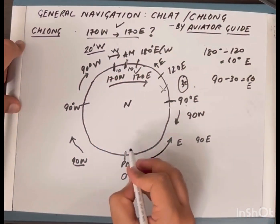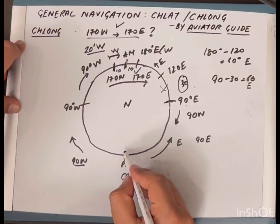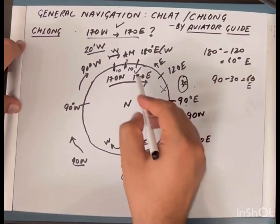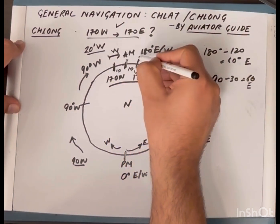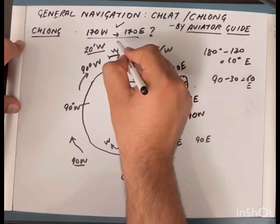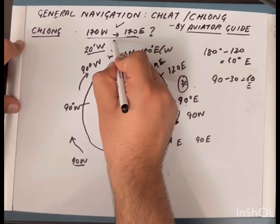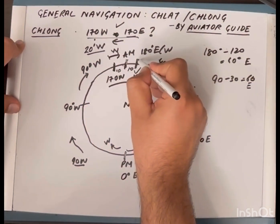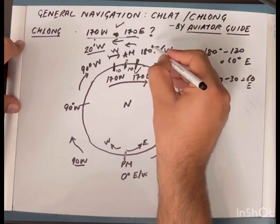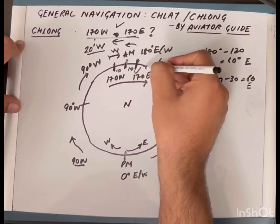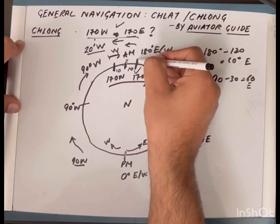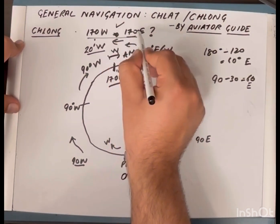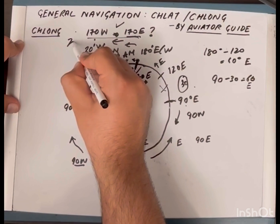Near the prime meridian it is easy to identify east or west, but near the anti-meridian it can be tricky. If you want to find the ch-long between 170 East to 170 West, you are traveling from 170 East towards the anti-meridian in a more easterly direction, so the answer for this question — from 170 East to 170 West — becomes 20 degrees East.